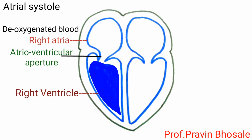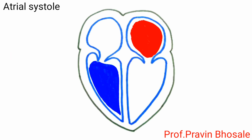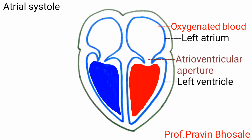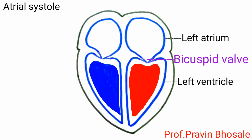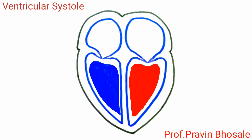During atrial systole, the deoxygenated blood from the right atrium enters the right ventricle through the atrio-ventricular aperture; backflow is prevented by the tricuspid valve. The oxygenated blood from the left atrium enters the left ventricle through the atrio-ventricular aperture; backflow is prevented by the bicuspid valve. Atrial systole lasts for 0.1 second.